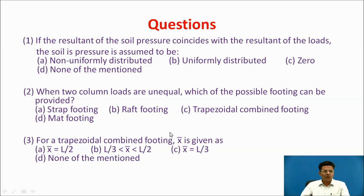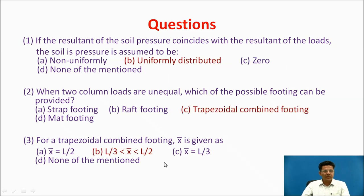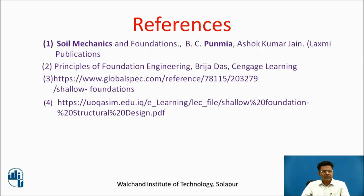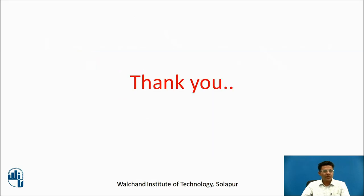Question 3: For a trapezoidal combined footing, x bar is given by: (a) L/2; (b) L/3 < x bar < L/2; (c) x bar = L/3; or (d) none of the mentioned. Answer: L/3 < x bar < L/2. These are the references used for drafting this presentation. Thank you.